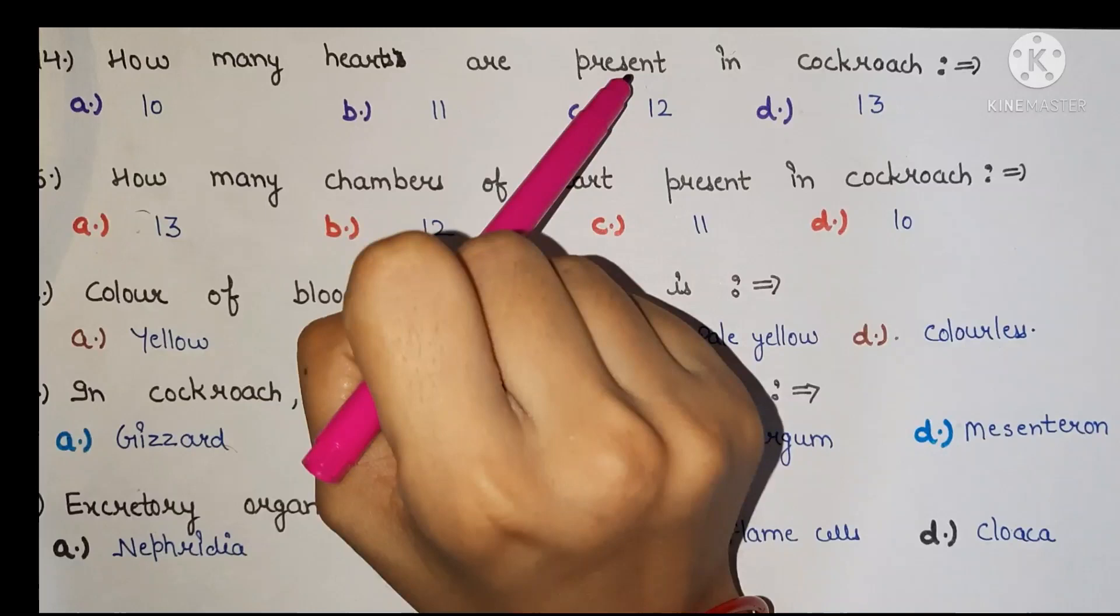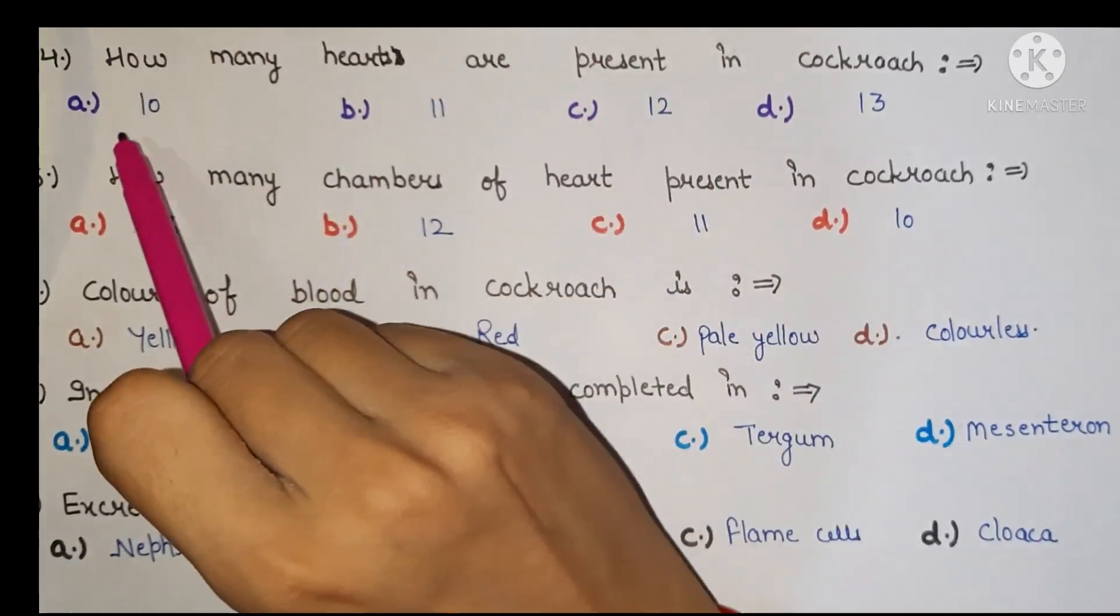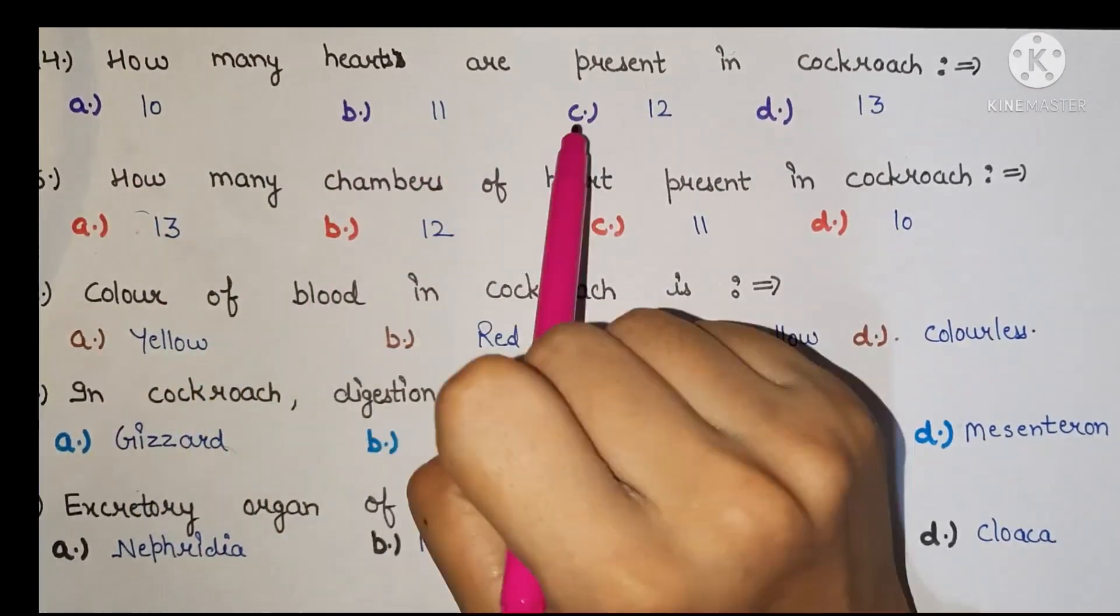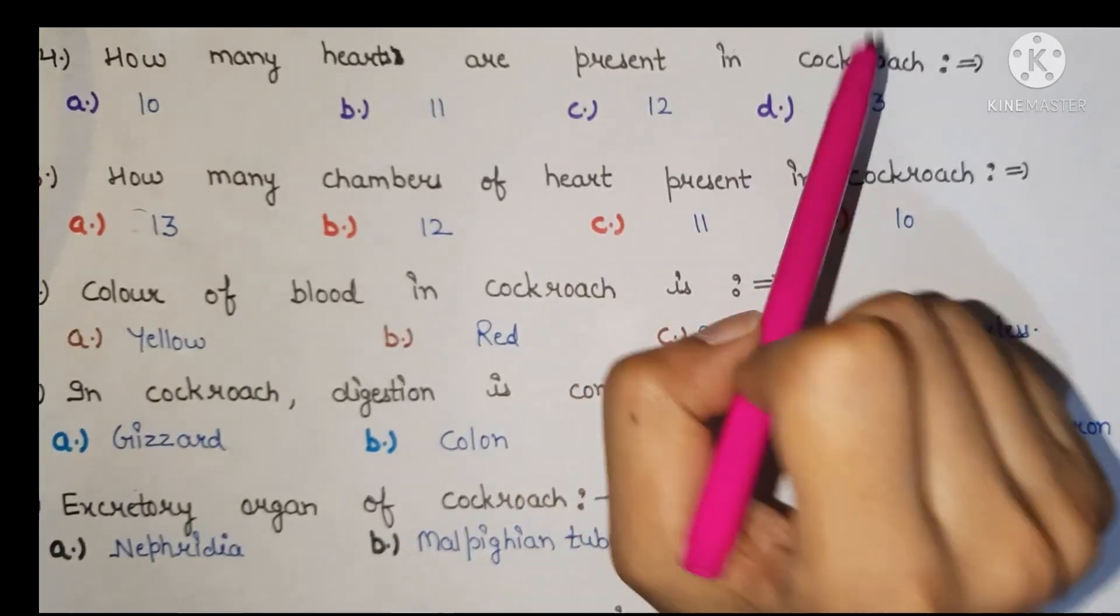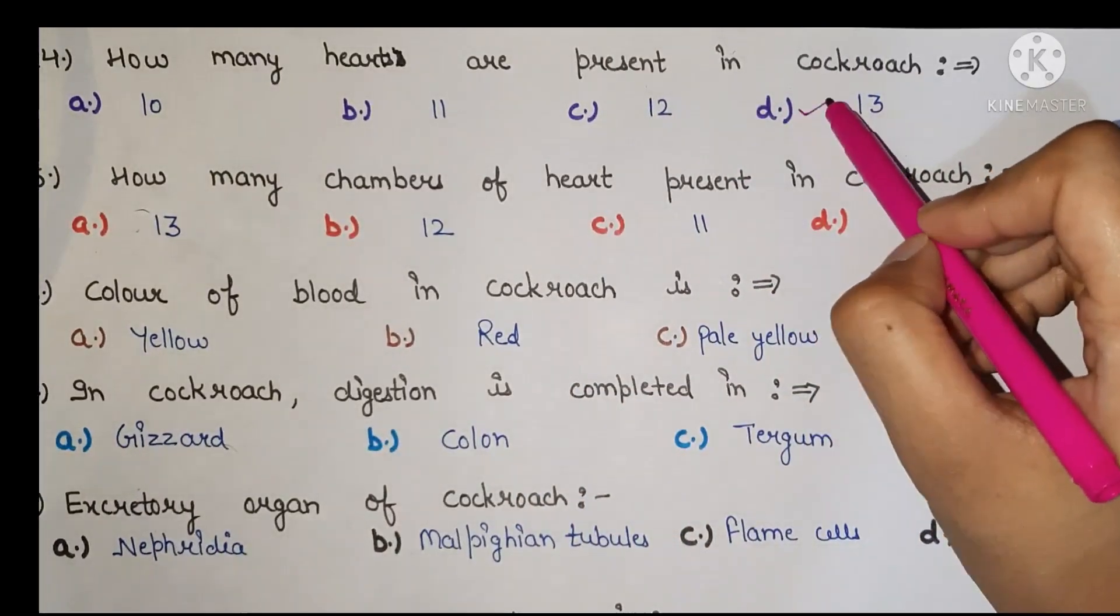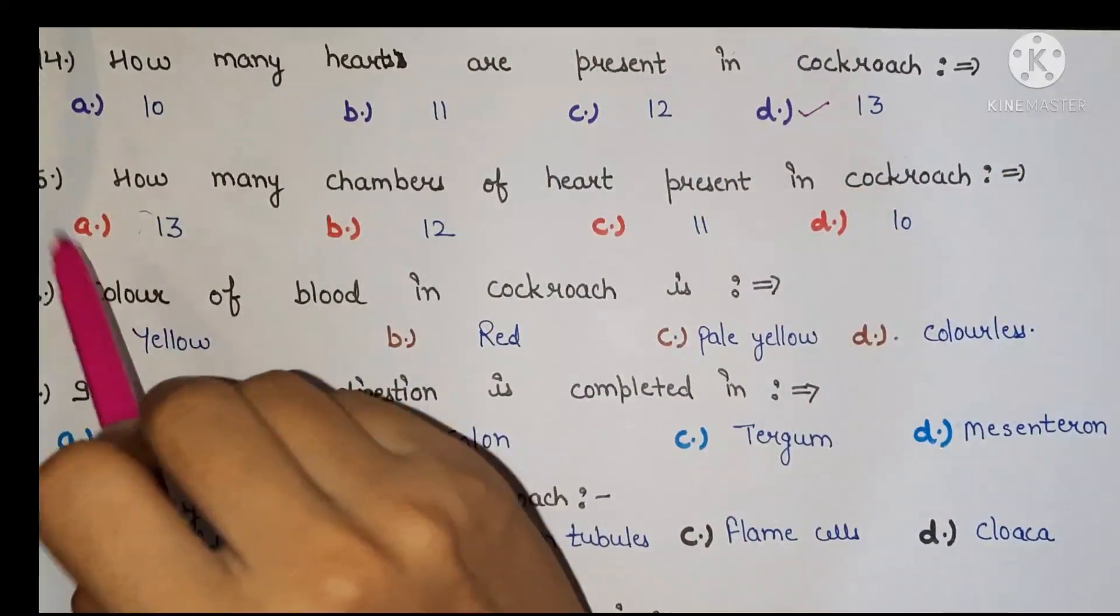How many hearts are present in cockroach? A 10, B 11, C 12, D 13. The right answer is D, 13.